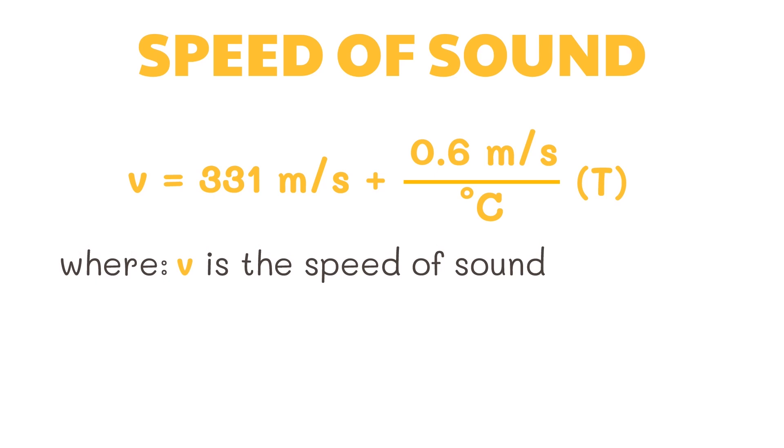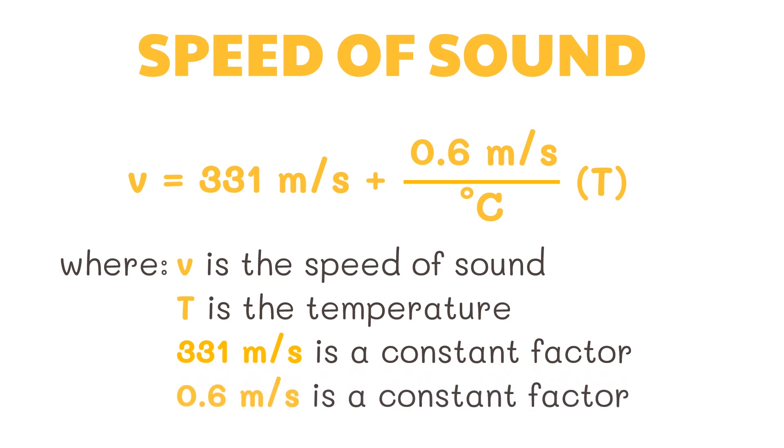Where V is the speed of sound, T is the temperature. 331 meters per second and 0.6 meters per second are constant factors.